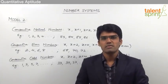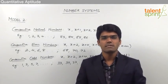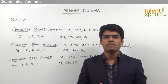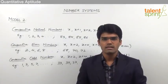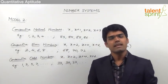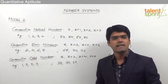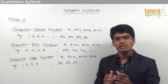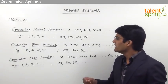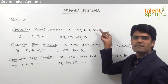Let us now take the second model from this topic of number systems, which is based on the concept of consecutive numbers. Consecutive numbers are those numbers which come one after the other at regular intervals. We have various types of consecutive numbers. The first one is consecutive natural numbers — those natural numbers which come one after the other, represented as x, x+1, x+2, x+3 and so on.